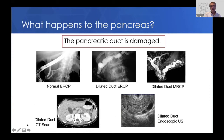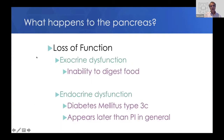Kids also have loss of function — exocrine dysfunction, the inability to digest food, and endocrine dysfunction, diabetes mellitus type 3C. The diabetes appears later than pancreatic insufficiency in general, although we do see children who have diabetes related to chronic pancreatitis.